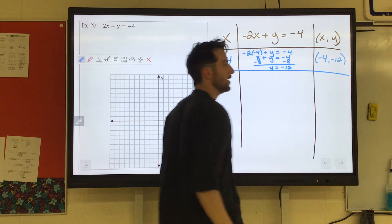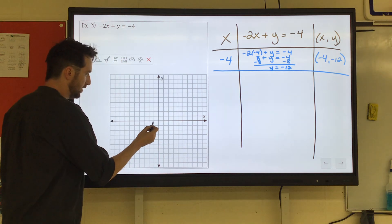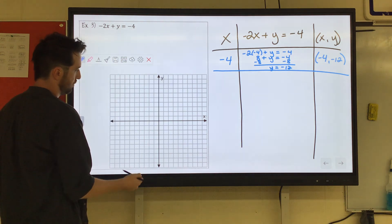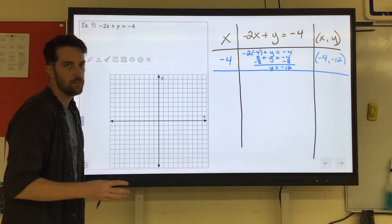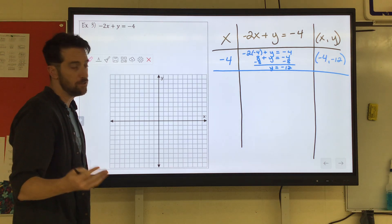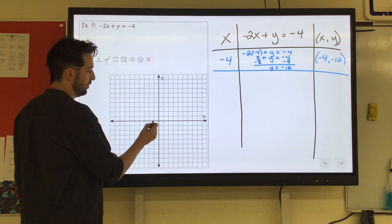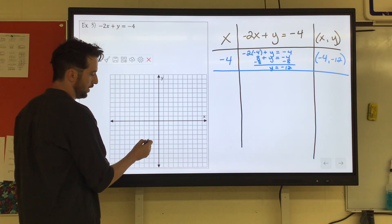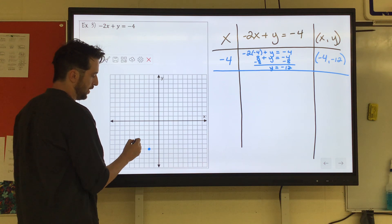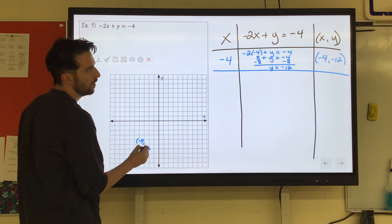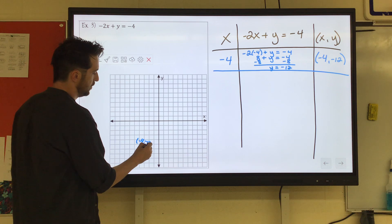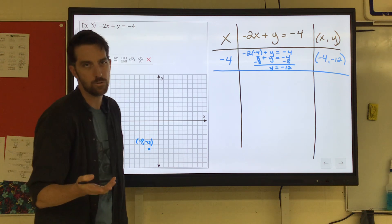So we'll have a point at negative 4, negative 12. That'd be to left 4, down 12. You know what? Let's go ahead and scale it by 2s because that's going to fall off my graph. So let's say this is like negative 2, negative 4, negative 2, 4, 6, 8, 10, 12. So here would be my point, negative 4, negative 12. Again, I just changed the scale. I went by 2s instead.